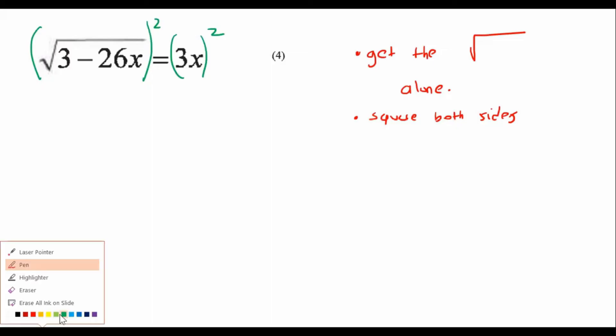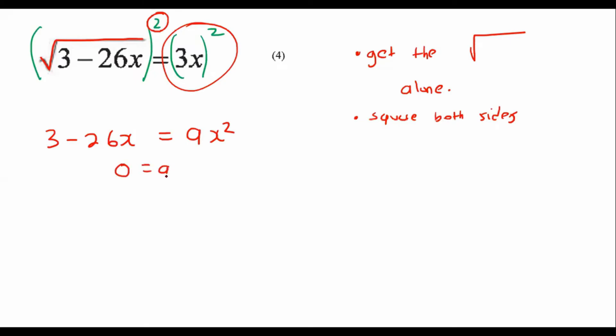Now, what happens over here is that this two is going to remove this square root because a square is the opposite of a square root. So they cancel each other out, and so we end up with 3 minus 26x equals to 9x squared. Then what we can do is take everything to the one side.